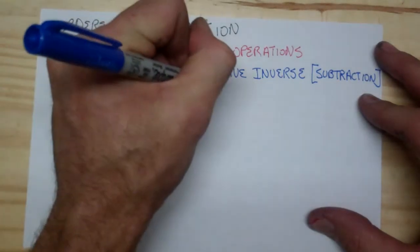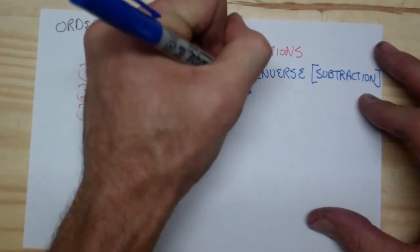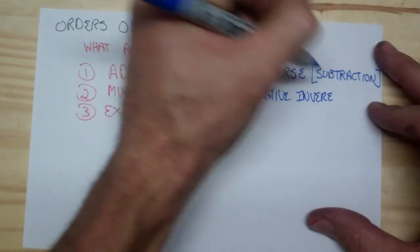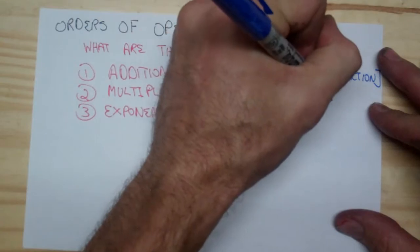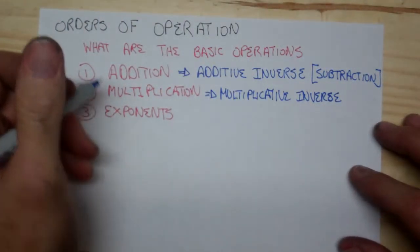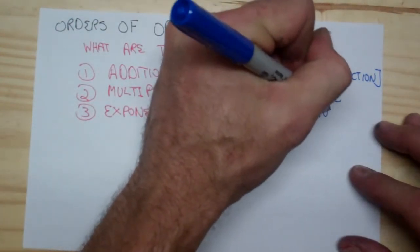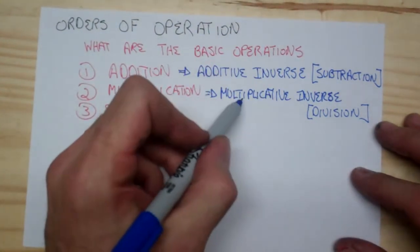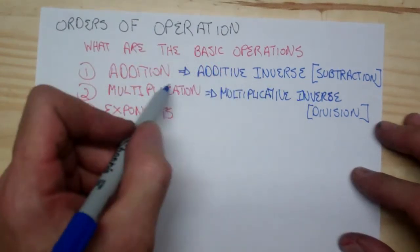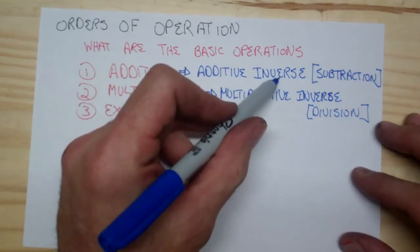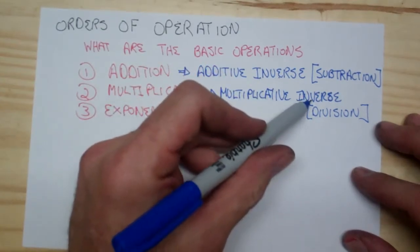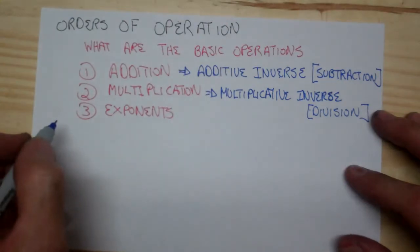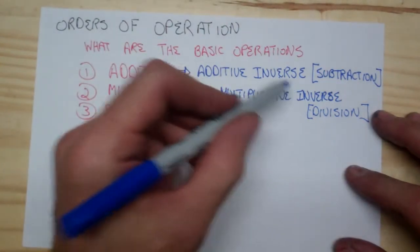For multiplication, of course, we have the multiplicative inverse, and the multiplicative inverse is actually division. This is where the keep it, change it, flip it rule comes from. The multiplicative inverse is to multiply by the reciprocal. So subtraction is add the opposite sign, division is multiply by the reciprocal. So subtraction and division are actually notations for addition and multiplication by their respective inverses.